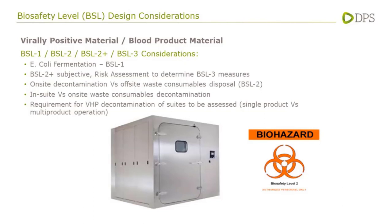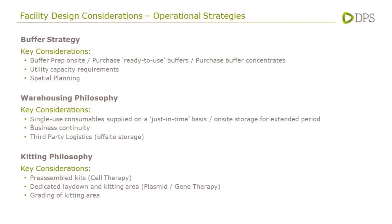Other considerations are operational strategies, which all factor into the facility design with respect to spatial constraints, utility requirements, and how the facility is planned out. The first is the buffer strategy: different approaches depending on scale include making buffers on site, purchasing ready-to-use buffers, or purchasing concentrates and diluting them in-line into the process. These different strategies speak to different requirements with respect to onsite buffer prep capacity, utility capacity, and staging requirements.